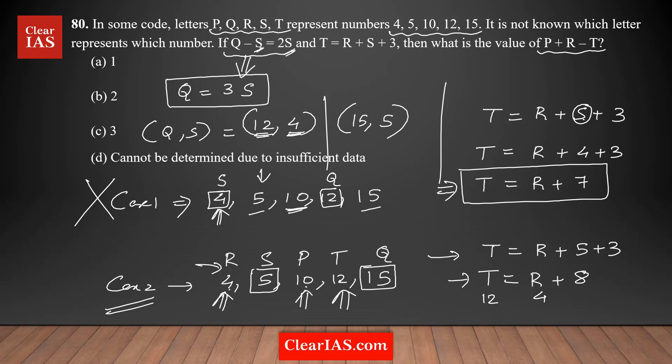So right now we found out the corresponding value of each of the letters. P is 10, R is 4, Q is 15, S is 5, and T is 12. All the values. This is enough to find out the answer for your question.